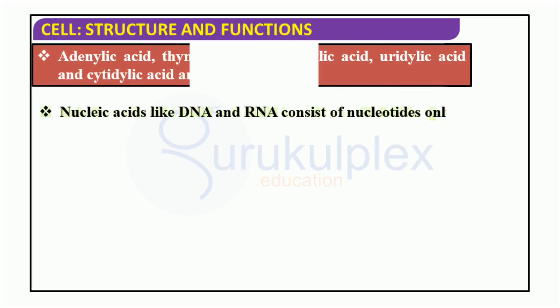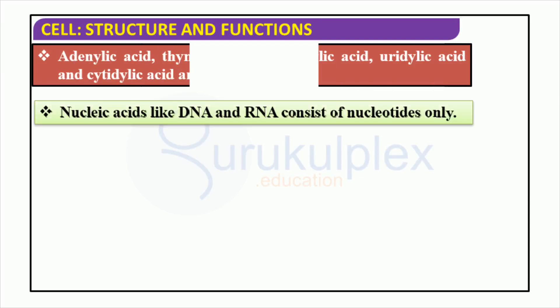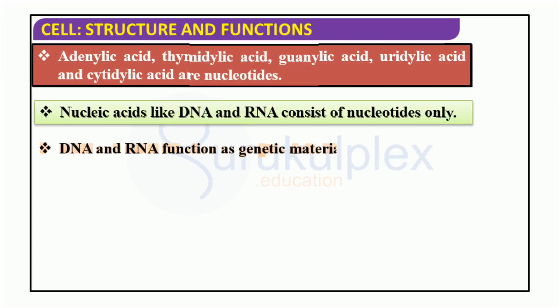Nucleic acids like DNA and RNA are composed of nucleotides, each having its own role. These nucleotides are adenylic acid, thymidylic acid, guanylic acid, uridylic acid, and cytidylic acid. Knowing how they interact and work is vital for grasping the mechanisms of life.